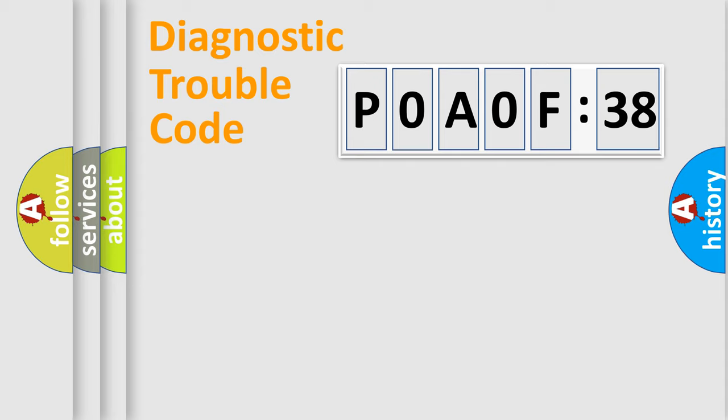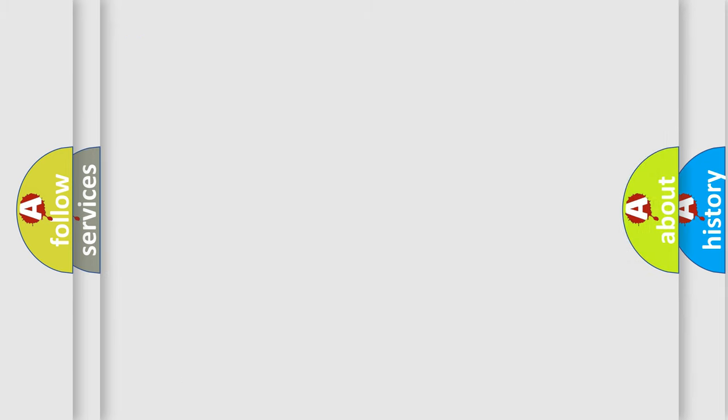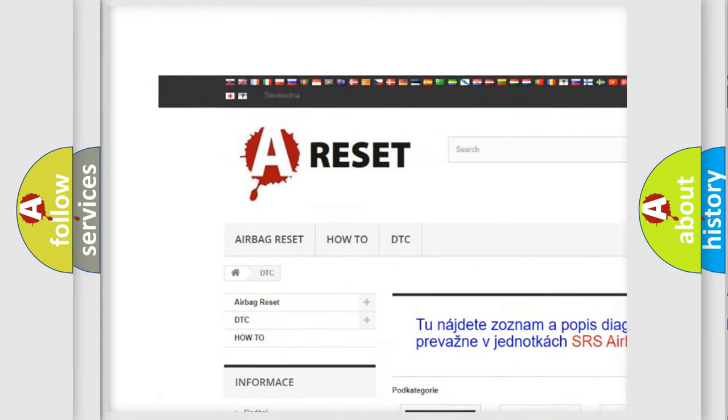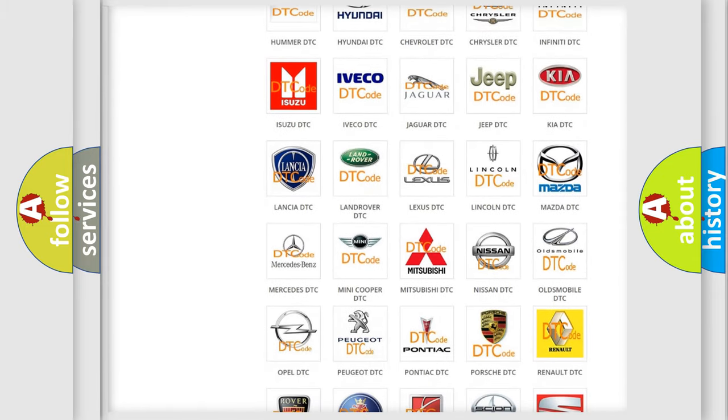Our website airbagreset.sk produces useful videos for you. You do not have to go through the OBD2 protocol anymore to know how to troubleshoot any car breakdown. You will find all the diagnostic codes that can be diagnosed in Nissan vehicles, also many other useful things. The following demonstration will help you look into the world of software for car control units.